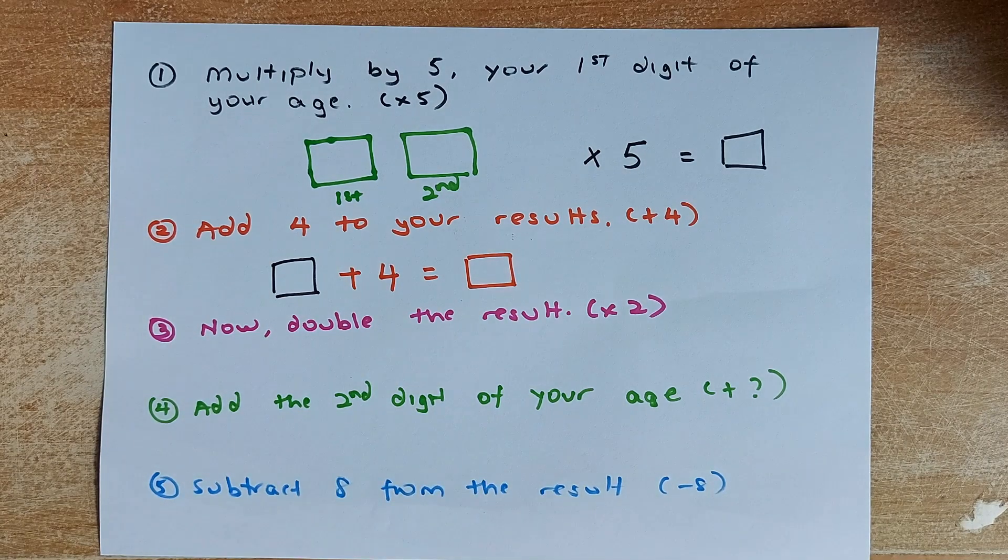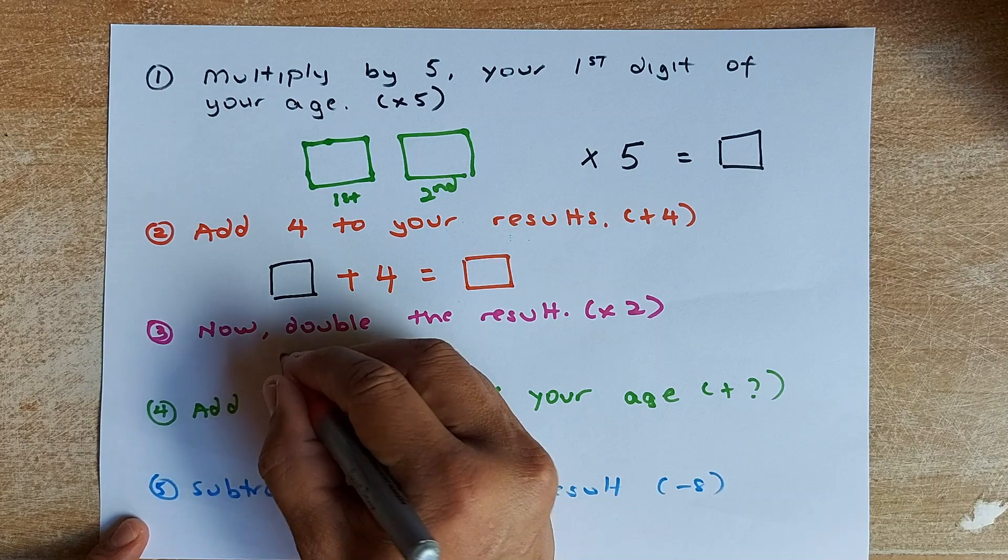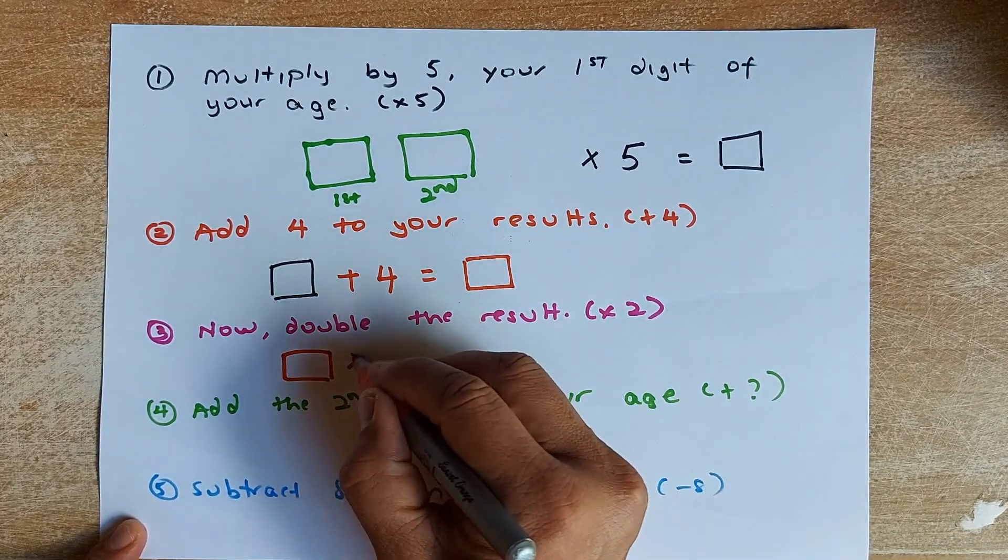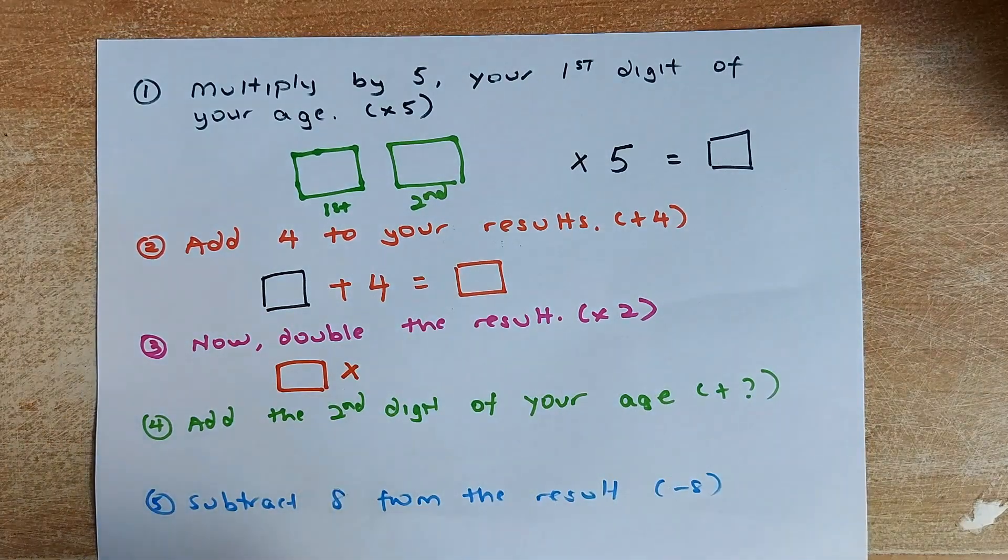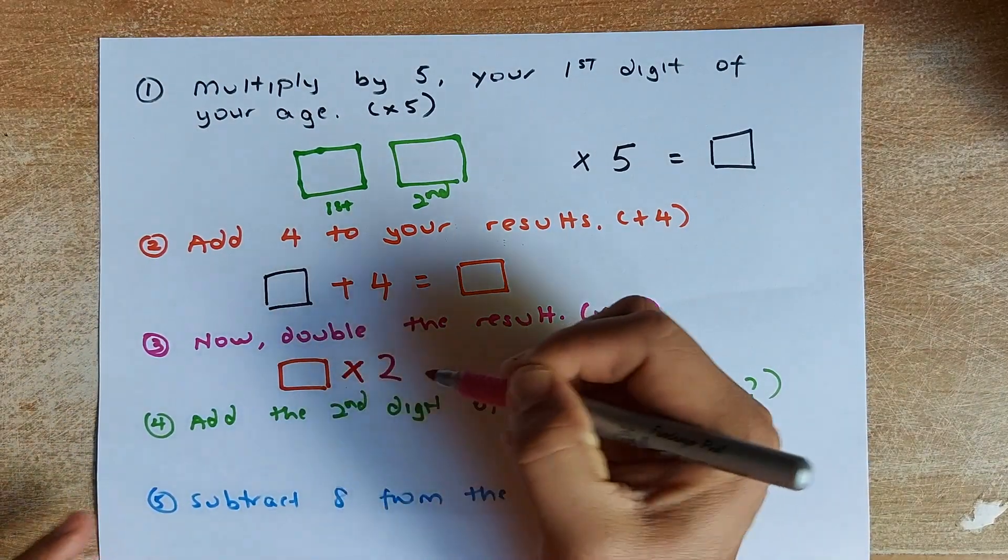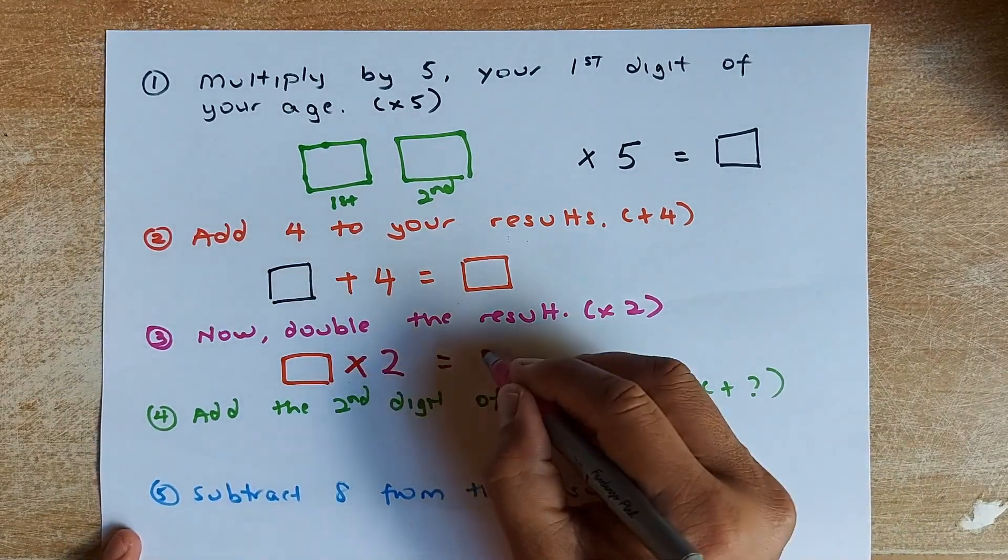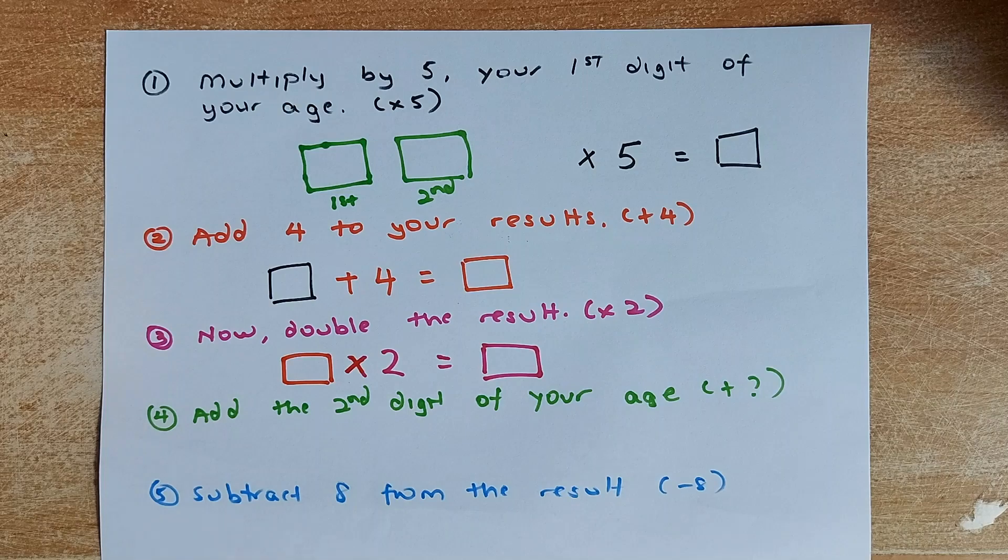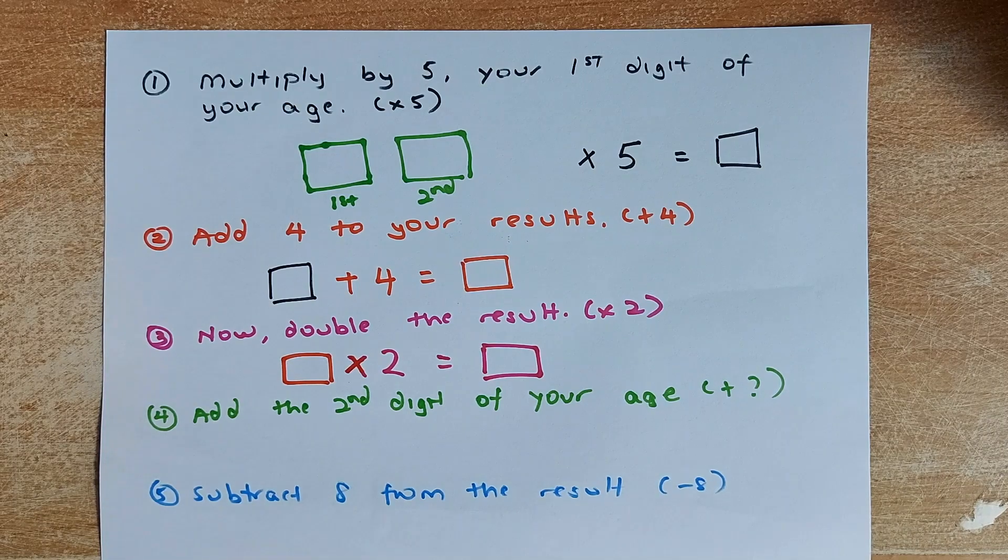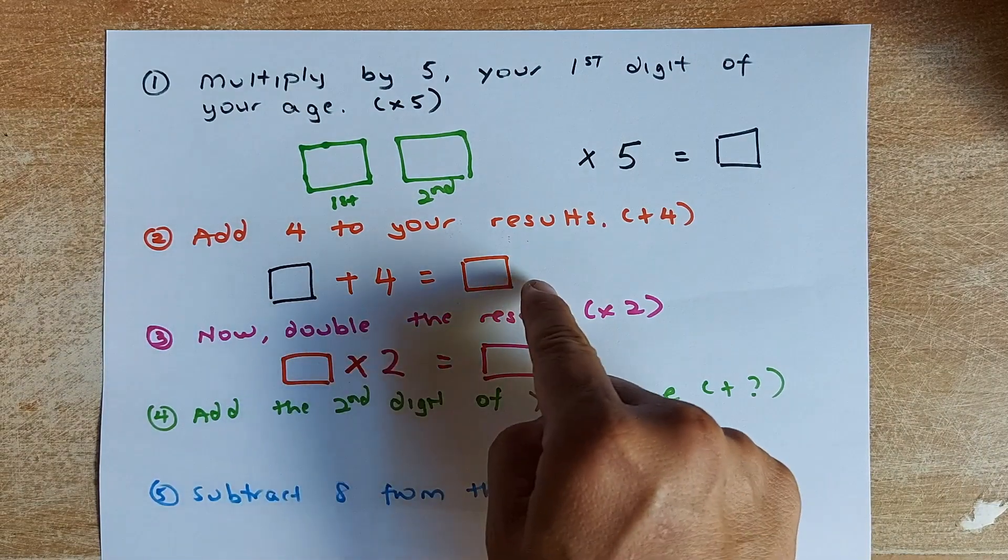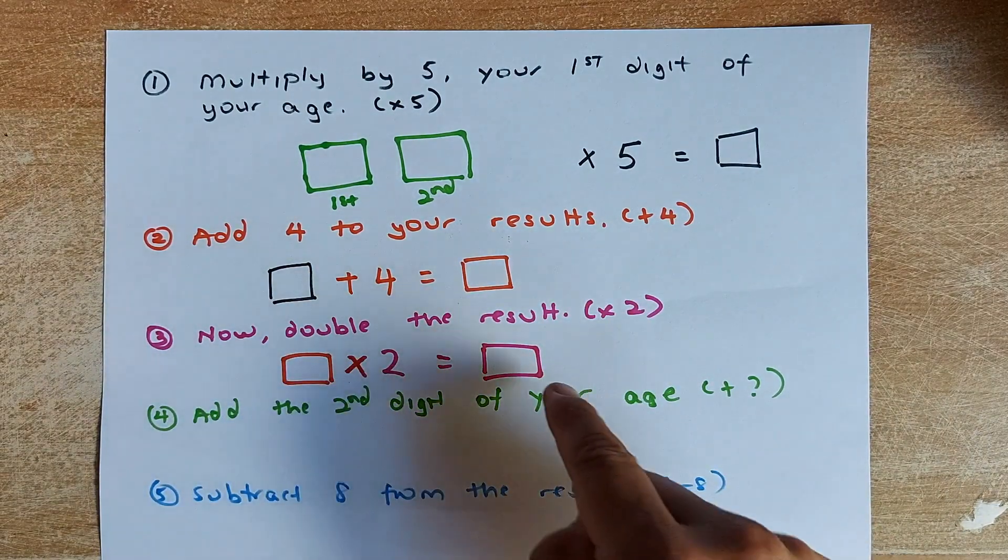Next step. You are going to take the orange box, and from that answer, you are going to multiply by 2. Double the result. So you are going to multiply by 2, and you get another answer. This time will give you a pink box. So far so good? Remember, so the first digit times 5, add 4 to the answer, then double it or multiply by 2. And you are now in step 3.